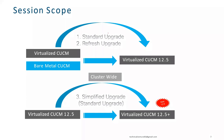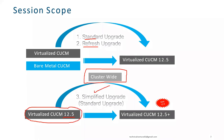How can we upgrade it? There are two ways: the standard upgrade and the refresh upgrade. These are the two upgrades we can perform to go from one version to another. There is also a cluster-wide upgrade available after upgrading to version 12.5. If you are on virtualized CUCM 12.5 only, then you can do this simplified cluster-wide upgrade. If you are running version 11.x, 10.x, or something older, then you can do the standard upgrade or the refresh upgrade.